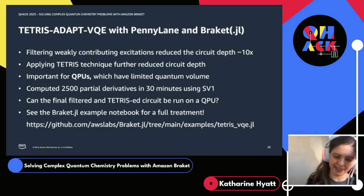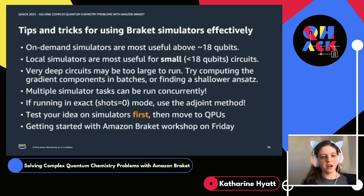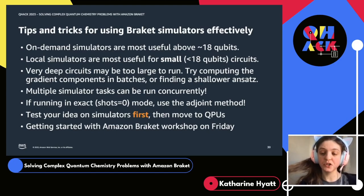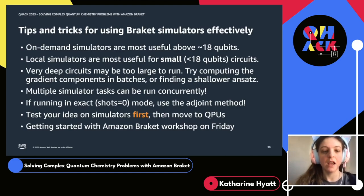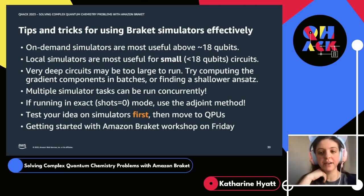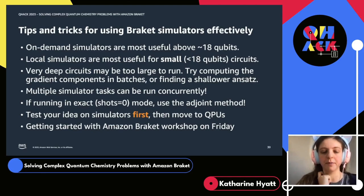If you're interested in finding out more, check out the Braket.jl example notebook, which I'll post in the Discord. I want to end on some tips and tricks for using the Braket simulators effectively. The on-demand simulators such as SV1 are most useful for when you're running a circuit that has more than about 18 qubits — in that situation, we strongly recommend you use the on-demand simulators: SV1, TN1, and DM1. The local simulators, which run on your hardware such as a notebook instance or your laptop, are great for experimenting with small circuits, i.e., less than 18 qubits. If you want to run a big circuit that approaches what can fit on a QPU, we strongly recommend you use SV1.